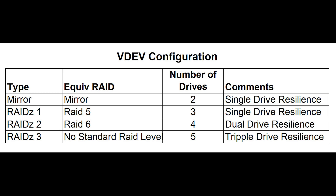If you're using two drives, by default it'll configure it in a mirror configuration, meaning the capacity is equal to a single drive and all the data is duplicated. With RAID Z1, you need three or more drives — two drives for capacity and a single drive for parity, providing one drive of fault tolerance. The more drives you add to this configuration, the more storage you get, but you still only get one drive of fault tolerance.